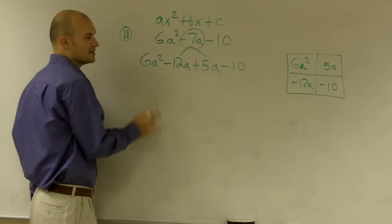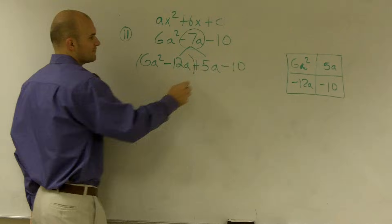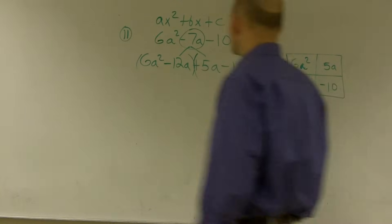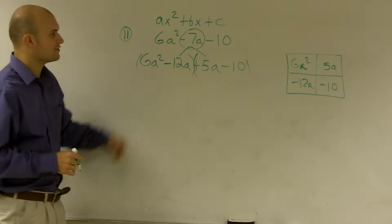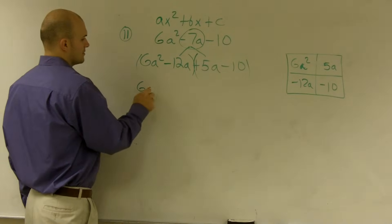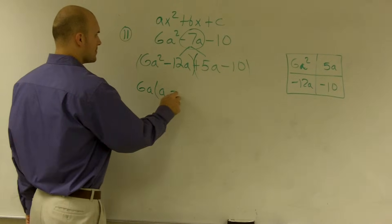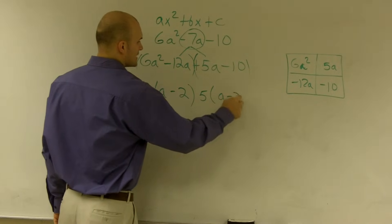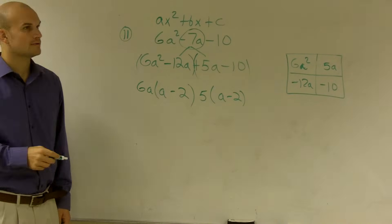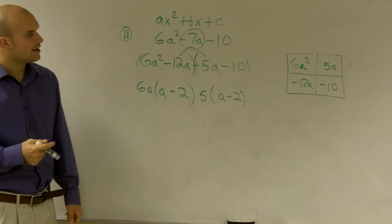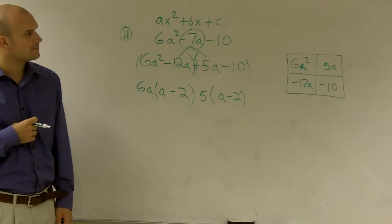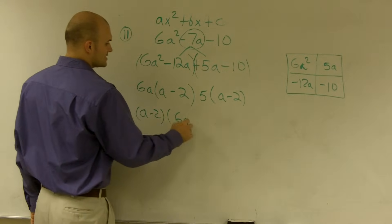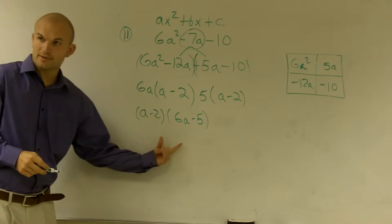For the first way, we use factor by grouping. Group the first two terms and ask what can I factor out. You could factor out a 6a, and you're left with a minus 2. Then factor out a 5 from the second group, and you're left with a minus 2. Then you can factor out an (a minus 2), giving you (a minus 2) times (6a plus 5). Those are your two factors.